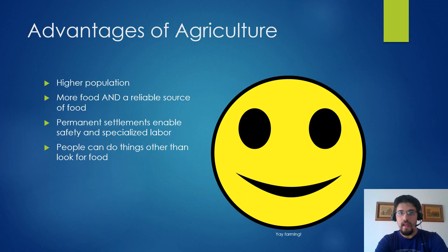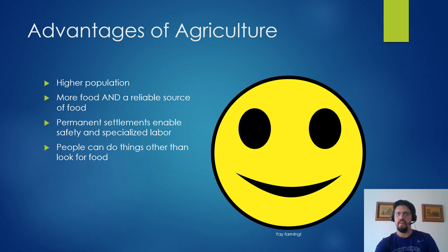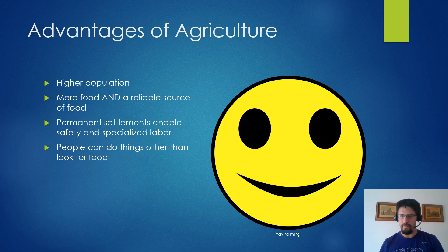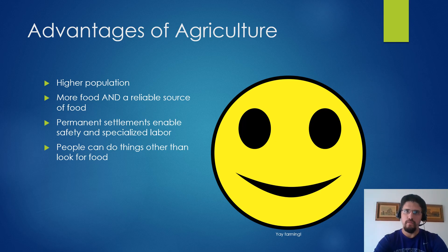You should create a T-chart in your notes because we're going to look at the advantages and disadvantages of agriculture. On the advantages side: there's more food, more people, it enables people to settle down, which enables specialization of labor — people can now have other jobs. This is what enables the development of craftsmen and priests. Basically, if you're not a farmer and you like what you do, you should thank a farmer.